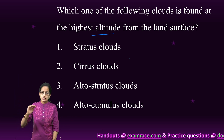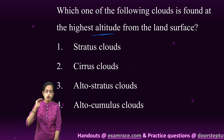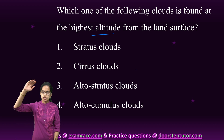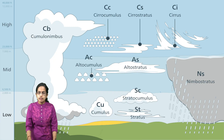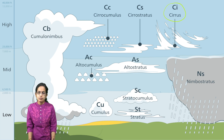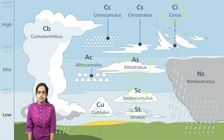The next question asks which cloud is found at the highest altitude from the land surface. Among the options, the highest is the cirrus cloud. As shown in the diagram, cirrus clouds are at the highest level, followed by stratus, cumulus, alto-cumulus, and stratus. So stratus, cumulus, alto, and cirrus is the correct order of clouds.